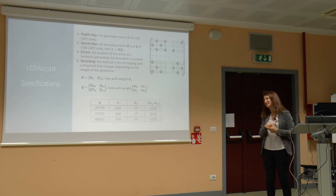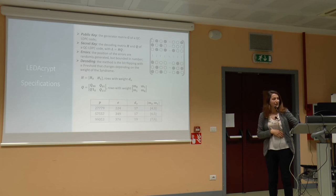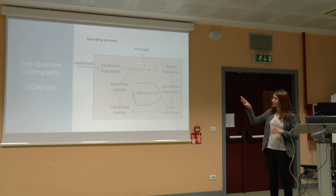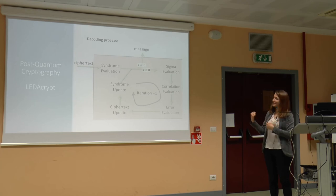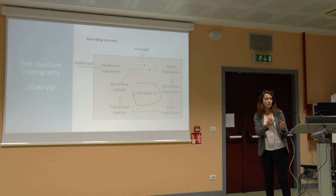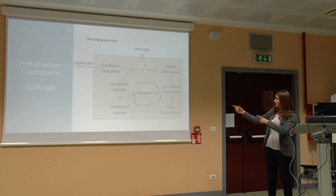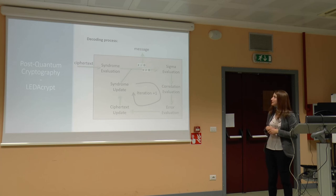LedaCrypt has a quite big problem in implementation because the dimensions of the code are huge. In the decoding process of this algorithm, we have to evaluate several parameters: the syndrome, which is the response to the parity equations evaluated before; and sigma and correlation, which allow us to evaluate for each bit of the received message how many wrong equations it is involved in. If a single bit is involved in many wrong equations, it is more probable that it is incorrect. From this, we evaluate the error and update the message obtained at the beginning.